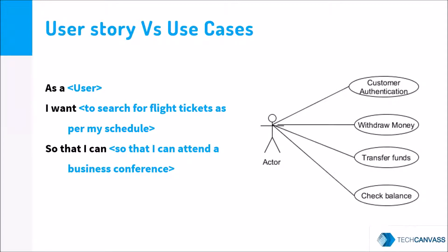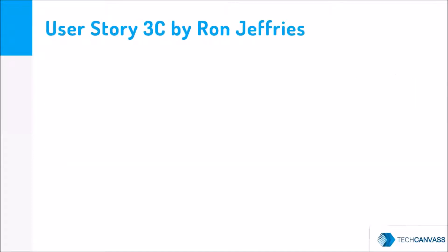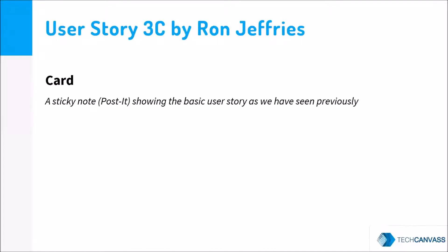However, we can combine user stories with a visual model so as to complete the entire capturing of the requirements. We are now going to see a model given by Ron Jeffries known as the user story 3C. There are 3Cs captured along with the user story. The card on one side shows the user story, and the details about the user story are known as conversation.